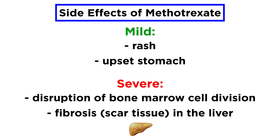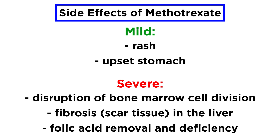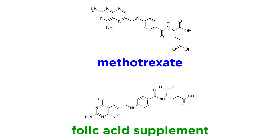Fibrosis, or the accumulation of scar tissue, can also occur in the liver, leading to liver dysfunction. Some side effects may be due to the displacement of folic acid by methotrexate, which can lead to increased folic acid removal from the body, and ultimately a deficiency of this crucial molecule. For this reason, many physicians will also prescribe folic acid to be taken with methotrexate treatment to limit potential side effects caused by folic acid deficiency.